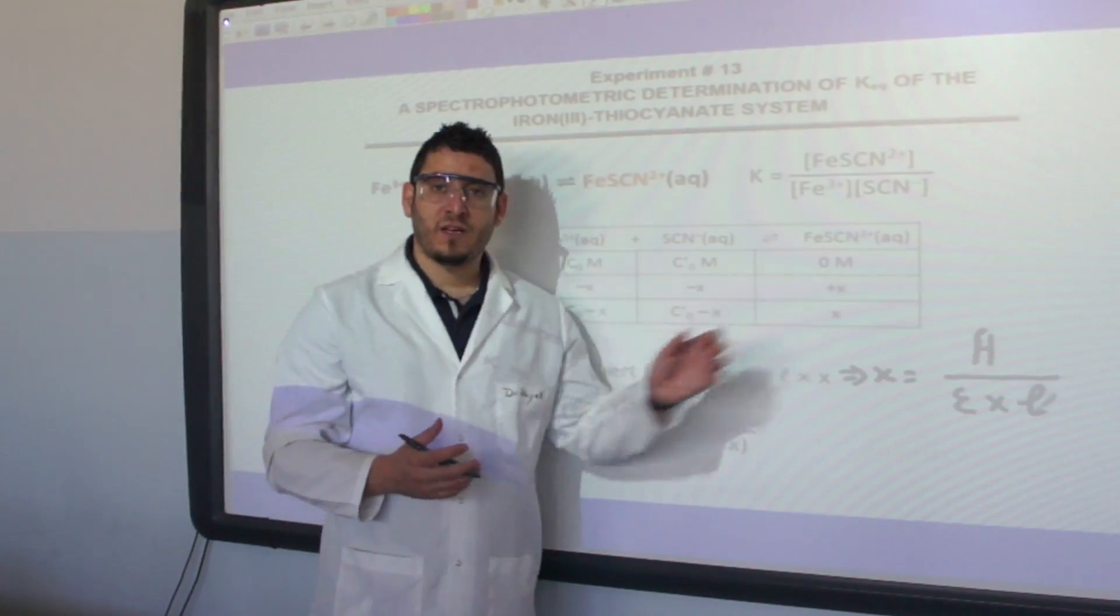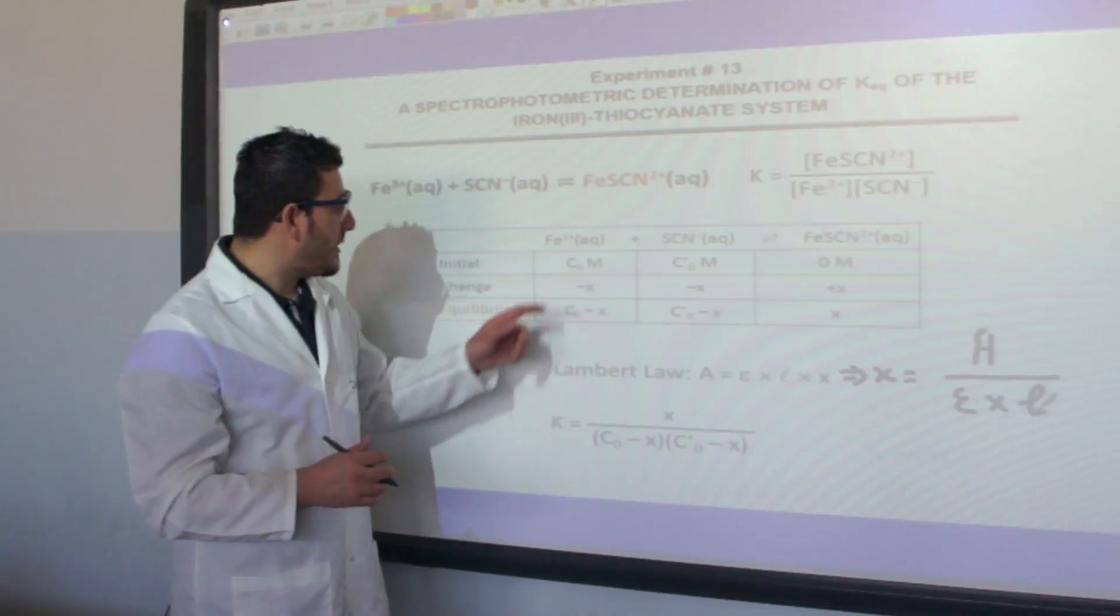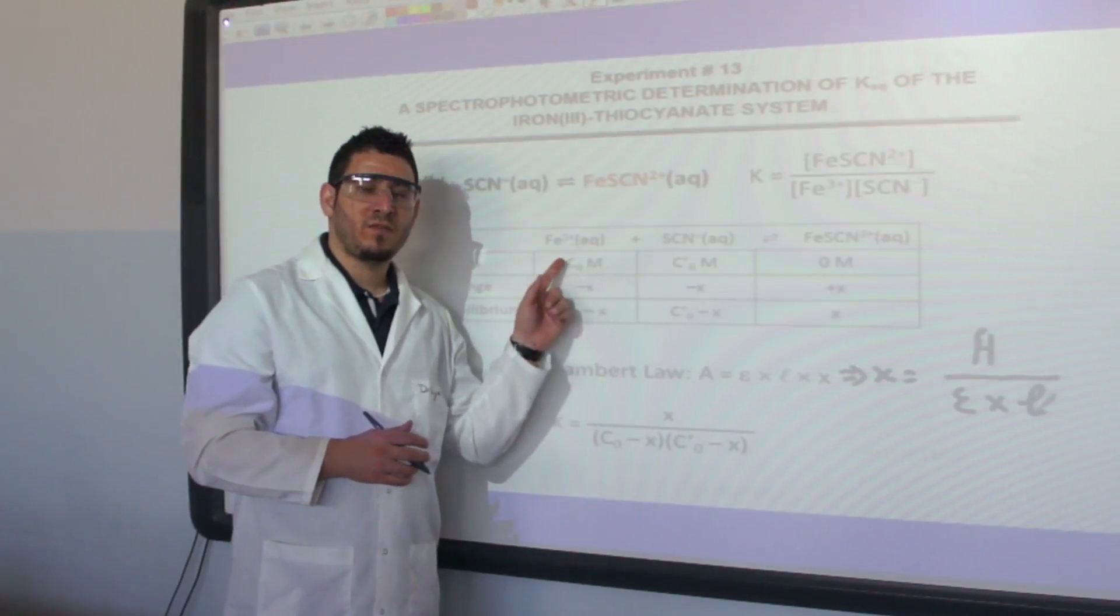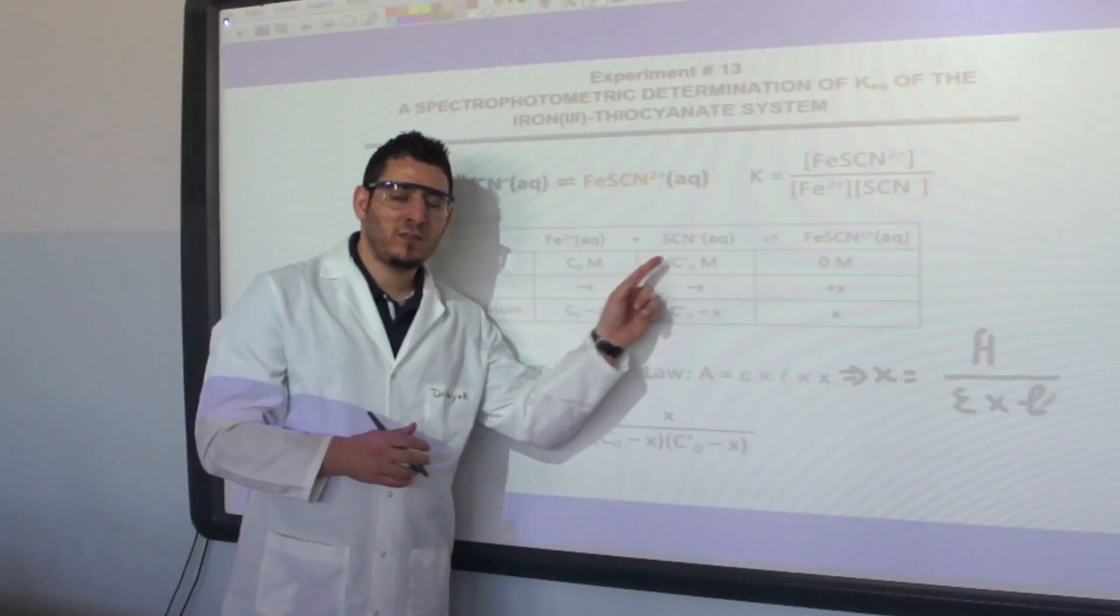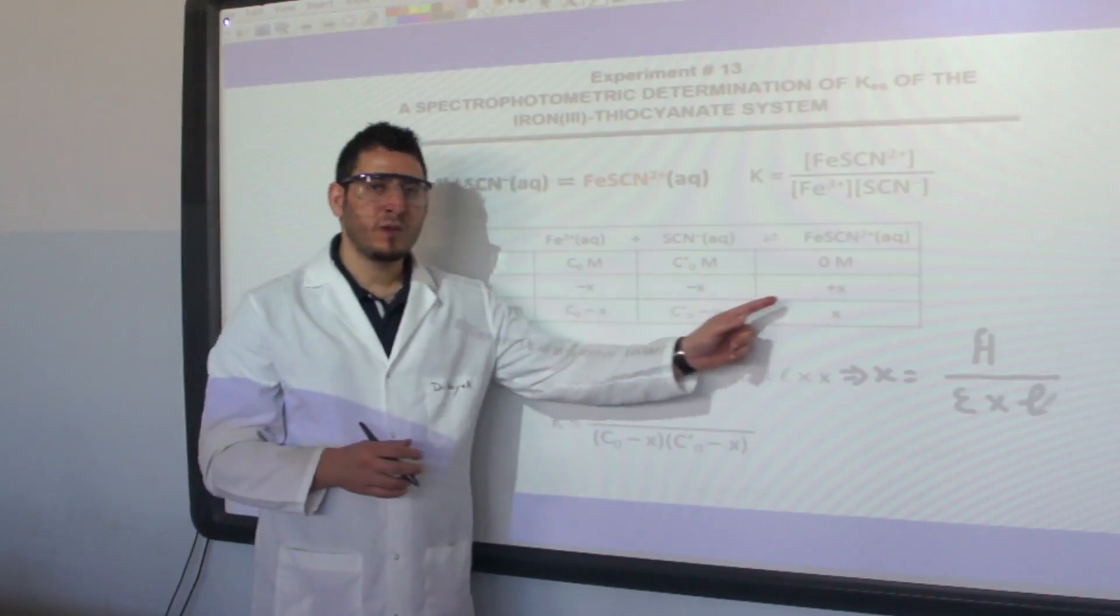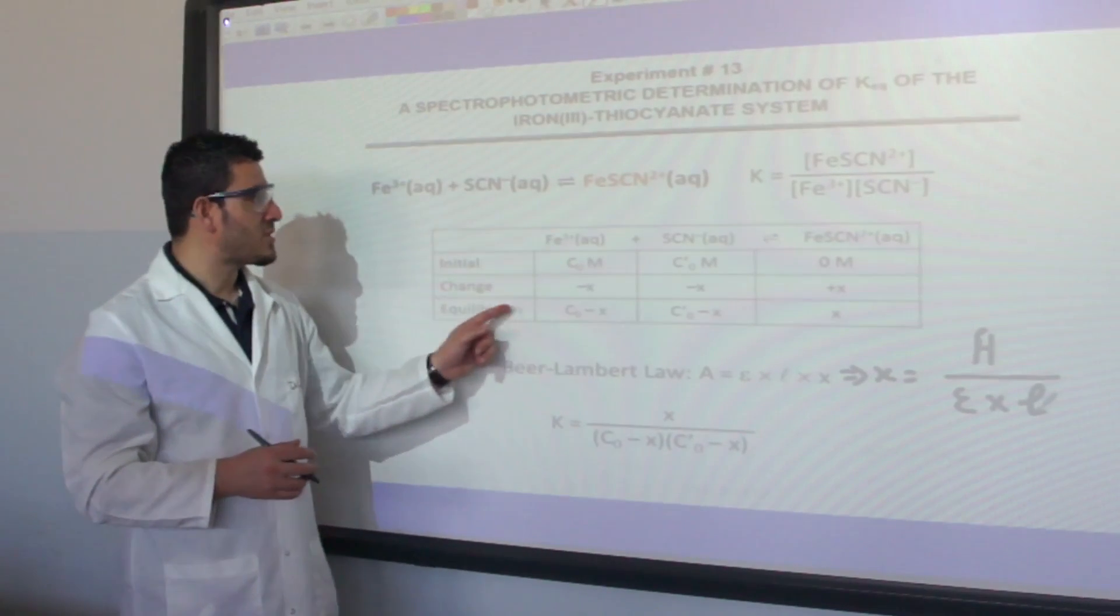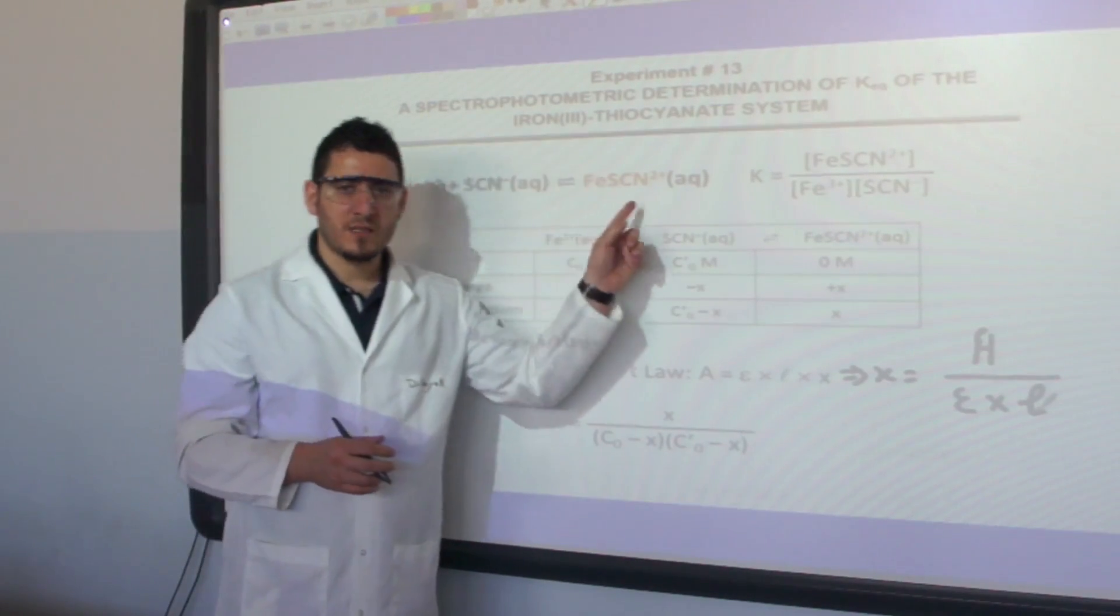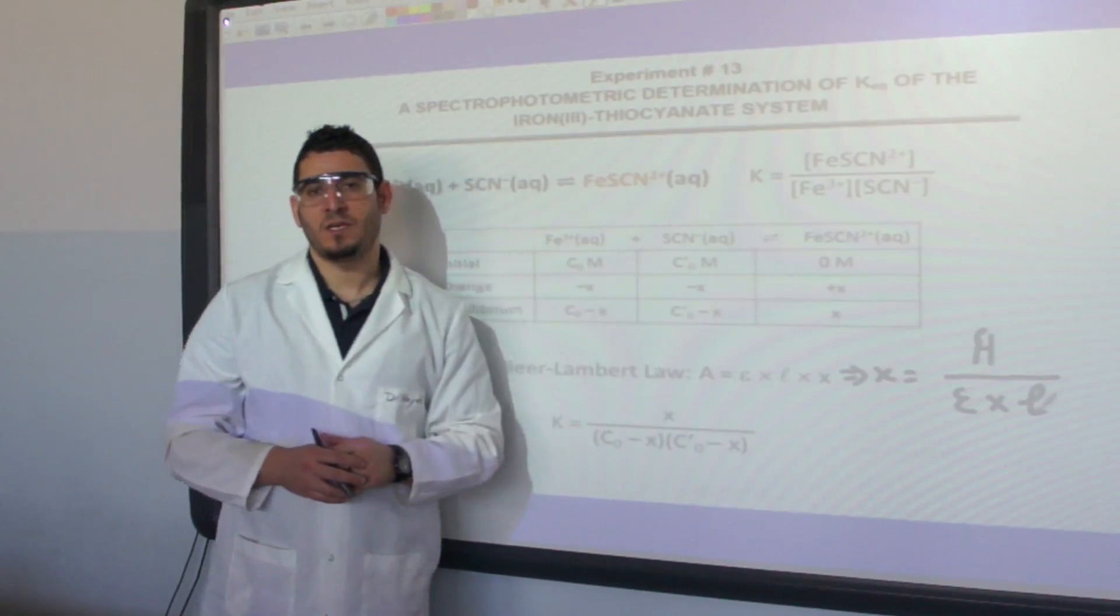Once I find X, I know the initial concentrations of iron-3 and the thiocyanate. I can find the equilibrium concentration of each species in the system and therefore determine K.